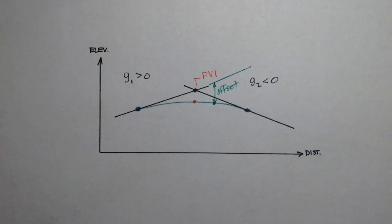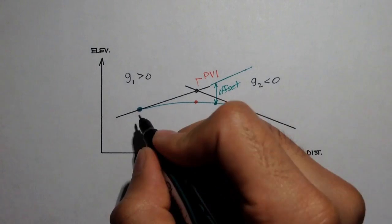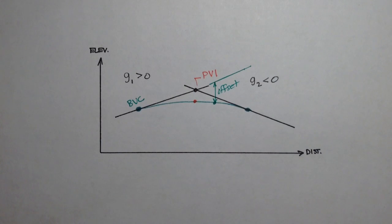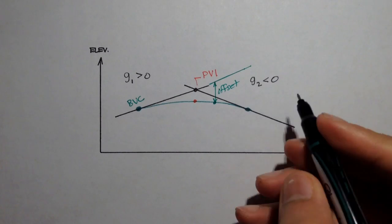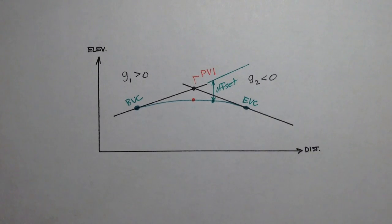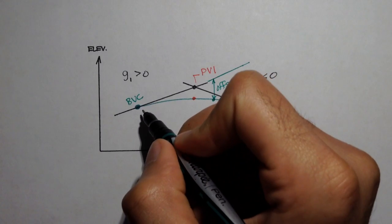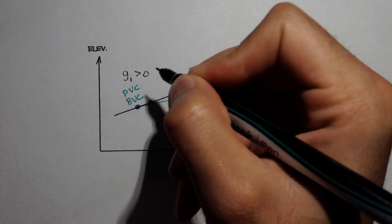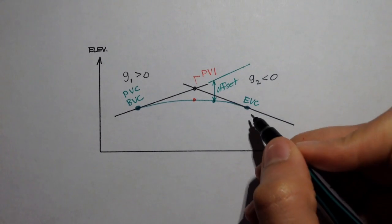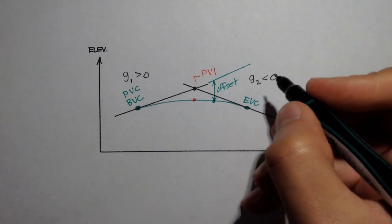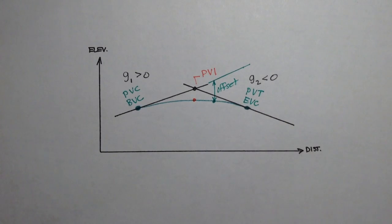The start of a vertical curve is usually called the beginning of vertical curve, or the BVC, and the end of a curve is called the EVC, or end of vertical curve. The BVC is sometimes also called the PVC — point of vertical curvature — and the EVC is sometimes called the PVT, which is the point of vertical tangency.